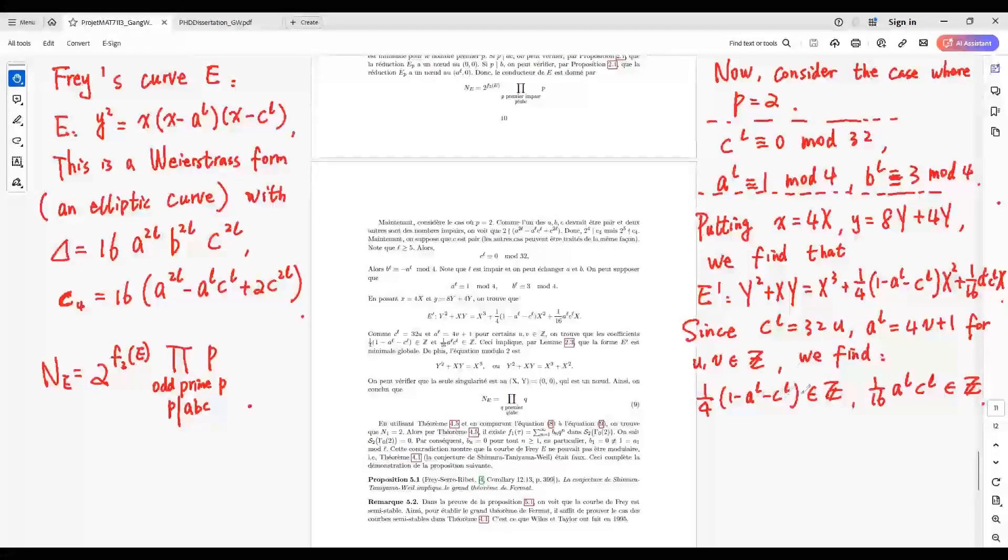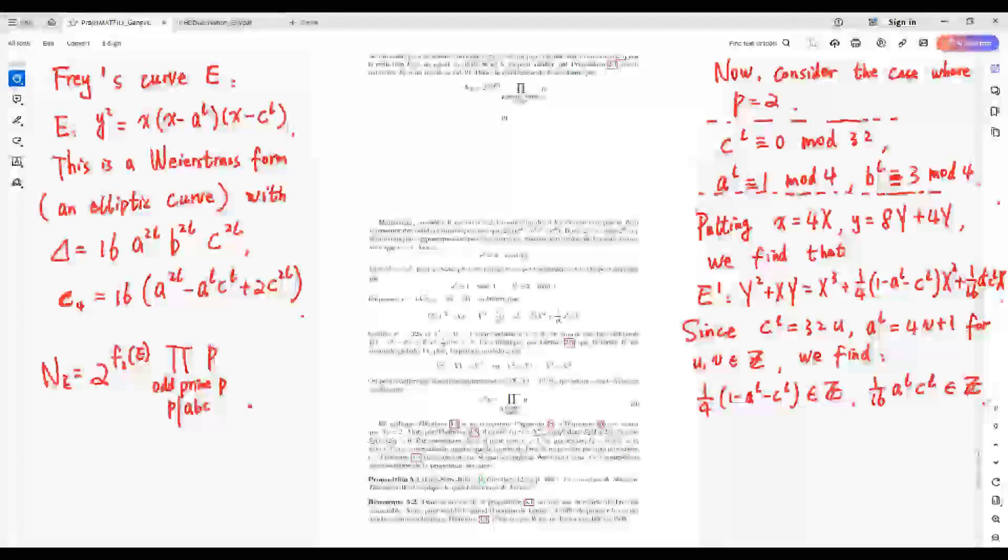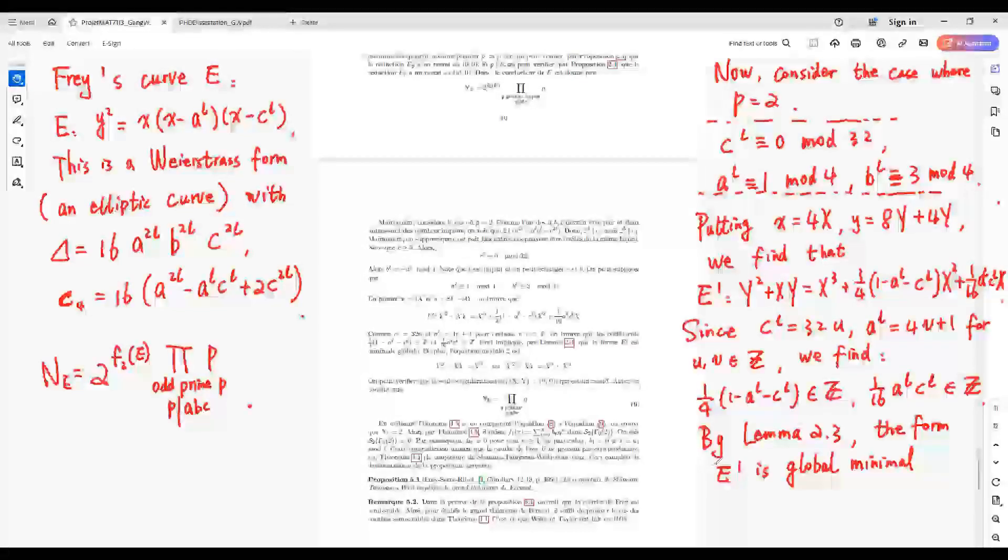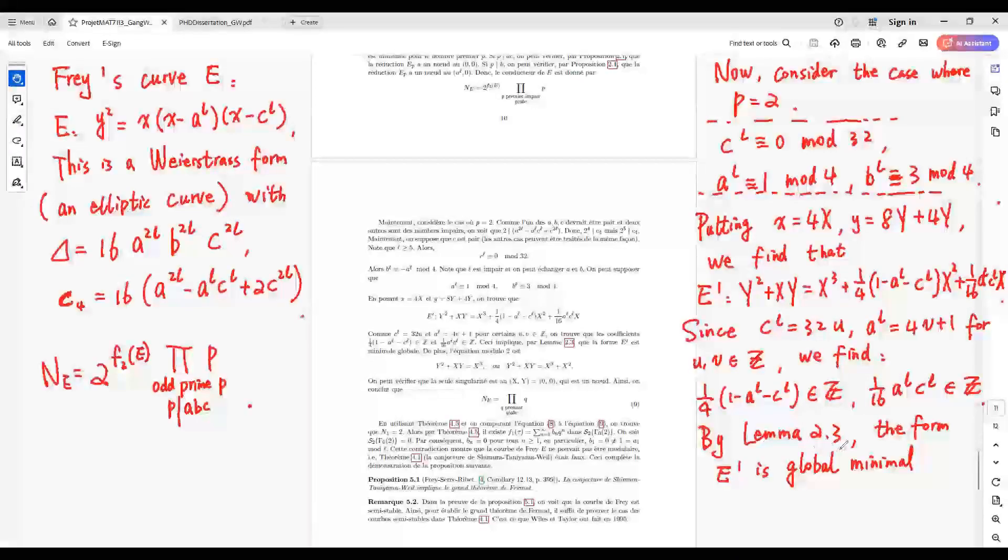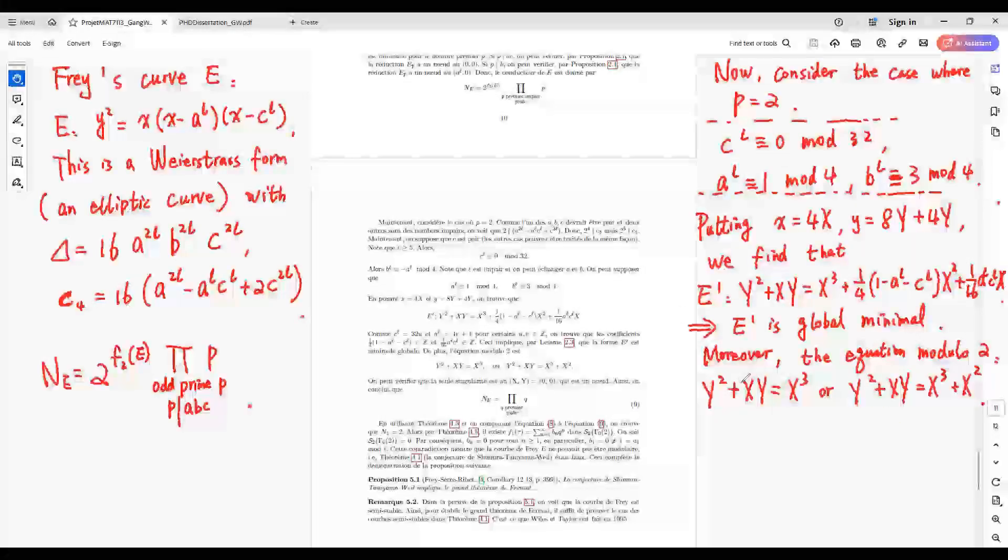Then we find this factor is integer and this factor is also integer. Again, by Lemma 2.3, the Weierstrass form for E prime is global minimum.